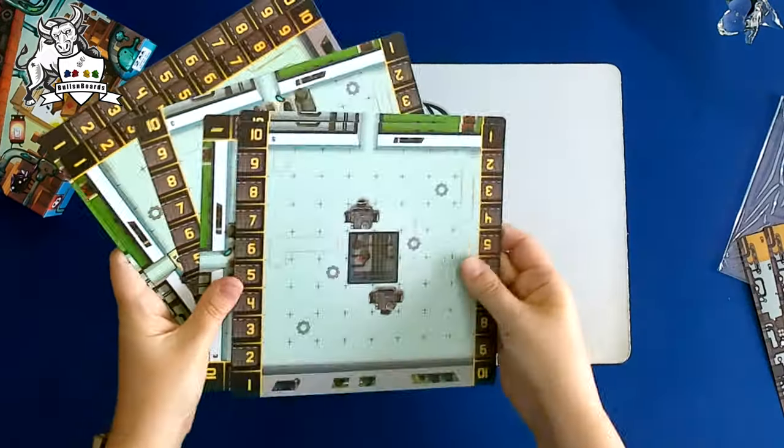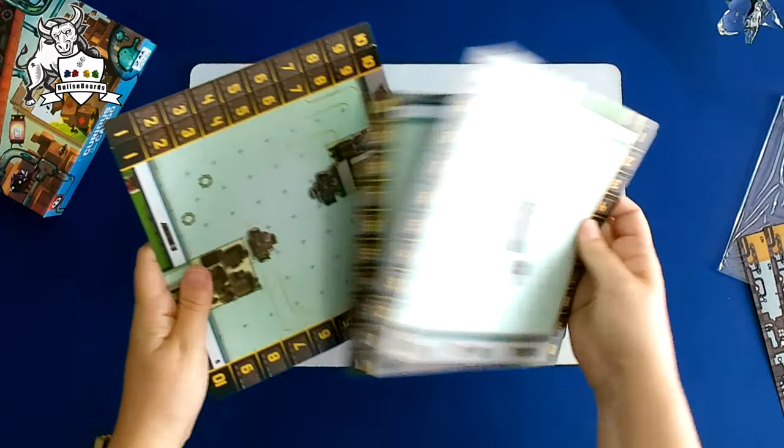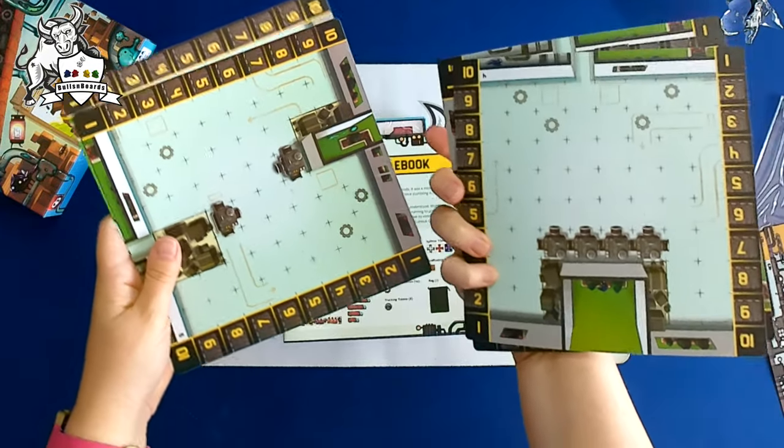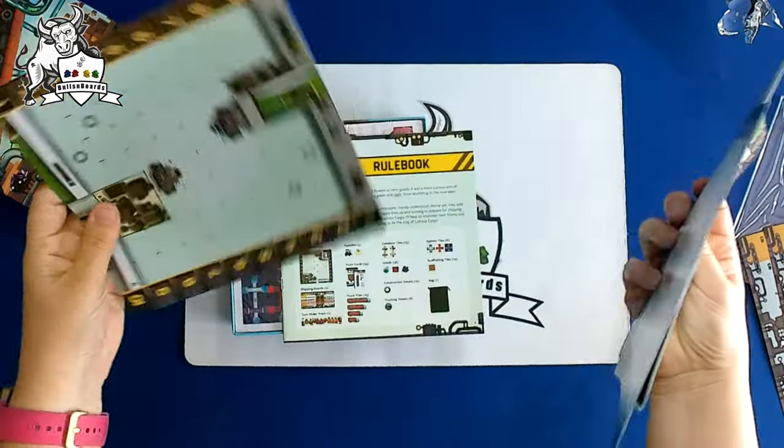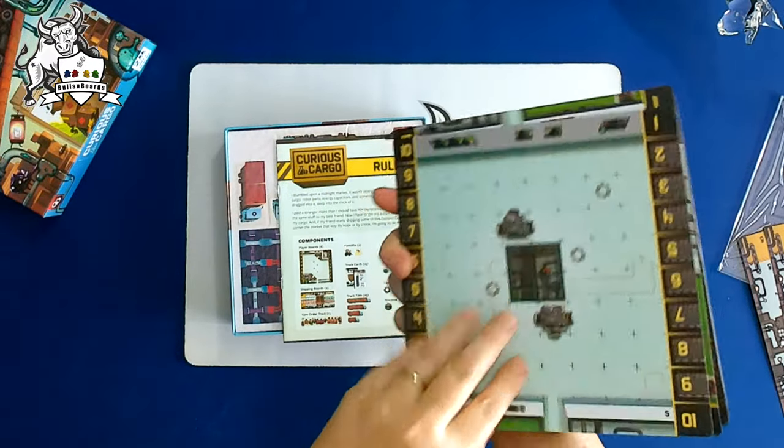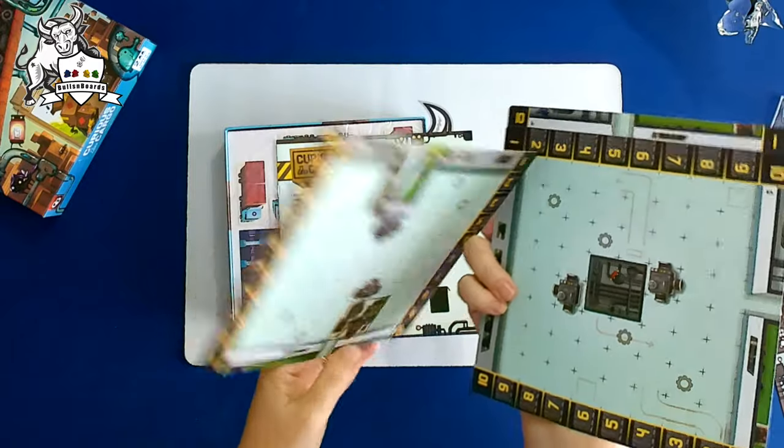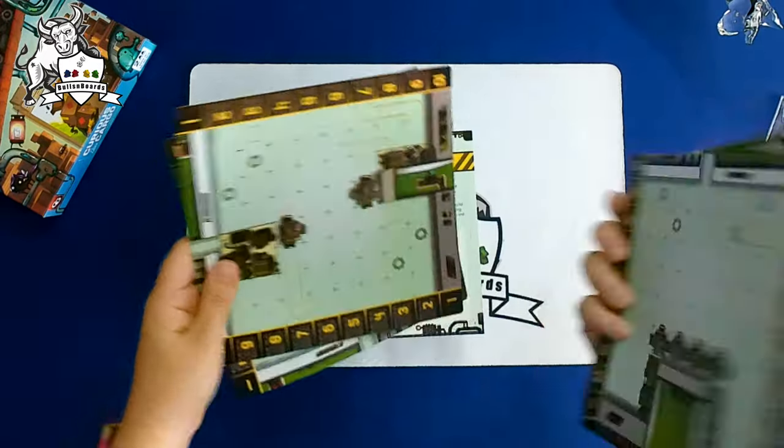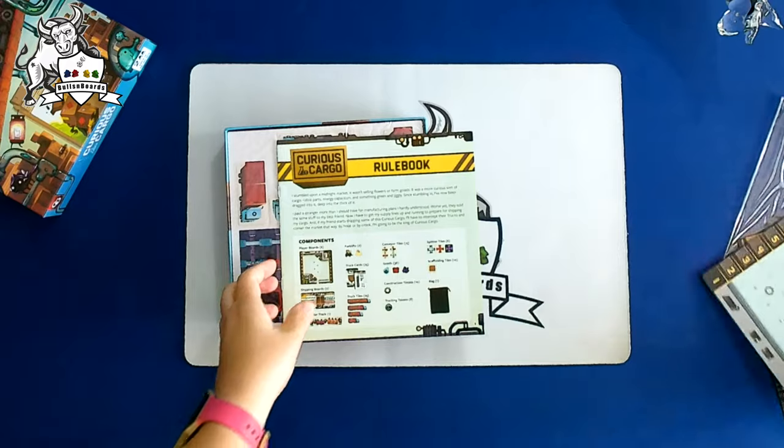These all look the same, not sure what they're for. Obviously you got spots to put things in, and doorways. I guess the doorways are different.